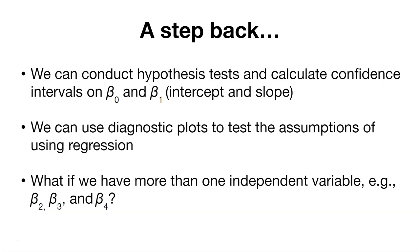But what if we have more than one independent variable? That is, we have beta 2, beta 3, beta 4, up to beta n. Well, multiple linear regression is going to allow us to have more than just one variable.